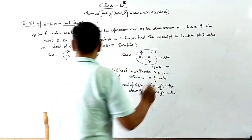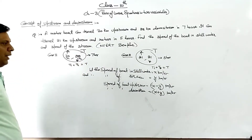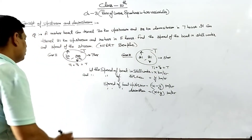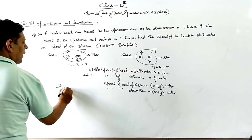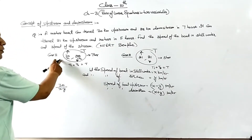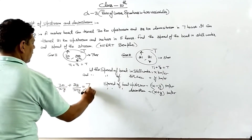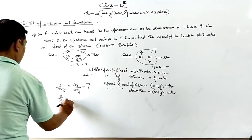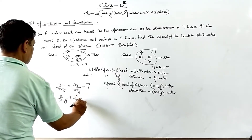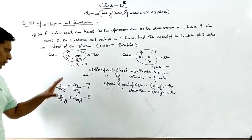In Case 1, D1 divided by S1 gives T1, and D2 divided by S2 gives T2. So upstream distance divided by upstream speed plus downstream distance divided by downstream speed equals total time 7. That gives us: 30 upon (x minus y) plus 28 upon (x plus y) equals 7. In Case 2: 21 upon (x minus y) plus 21 upon (x plus y) equals 5.